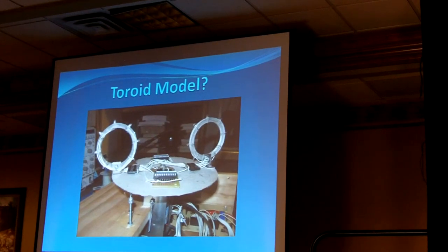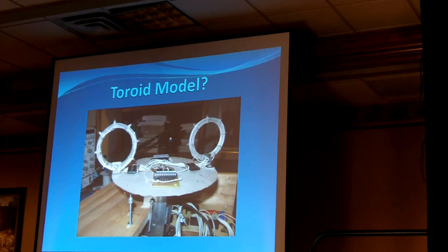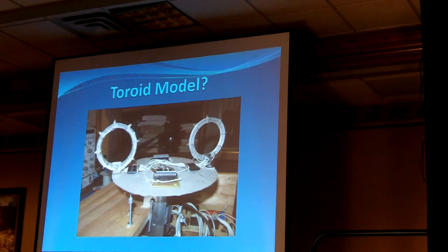This is a toroid model that Bob DeHilster built for me. The idea was to have light circulating around these circuits with the whole table circulating around, so you get a Christmas tree light effect — two simultaneous rotations around the toroid and around the platform. As the frequency of one interacts with the frequency of the other, you can get quantized changes.